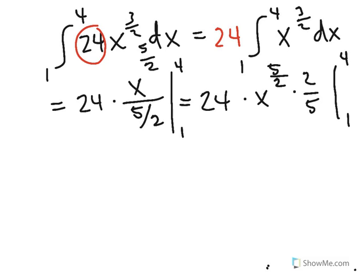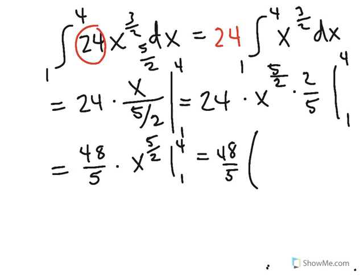Okay, so if I now take my function here, I've got the 24 and the 2 fifths can get multiplied together, so we're going to have 48 fifths times x to the 5 halves evaluated from 1 to 4. It took a while to clean that up, but now we're going to have 48 fifths times 4 to the 5 halves power minus 1 to the 5 halves power.